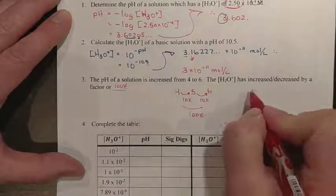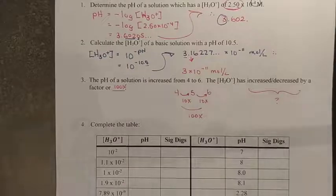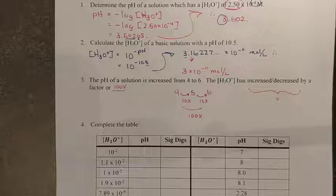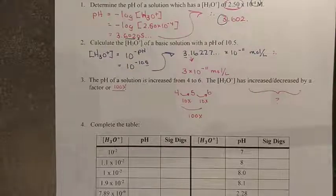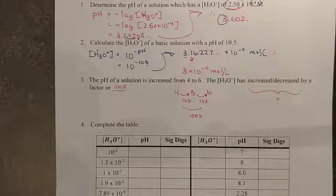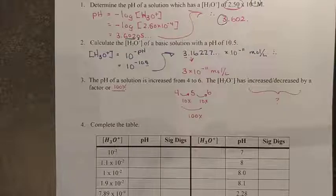The question is, has the hydronium increased or decreased by 100 times? Now, think about the change you're making in pH. Are you becoming more acidic by going from 4 to 6? Or are you becoming more basic as you go from 4 to 6?